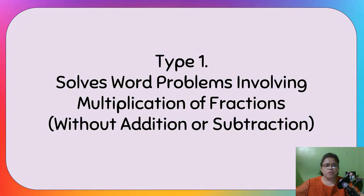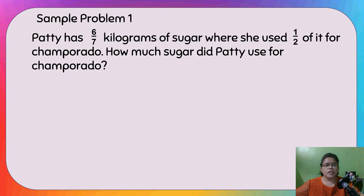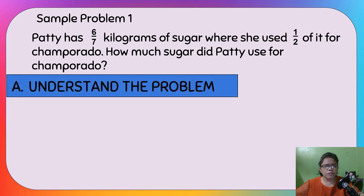Type 1 is solving problems involving multiplication of fractions — without addition or subtraction. Sample problem: Patty has 6/7 kilograms of sugar and she used one half of it for champorado. How much sugar did Patty use for champorado? First, understand the problem.